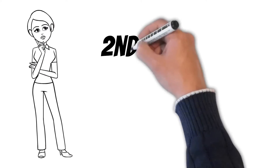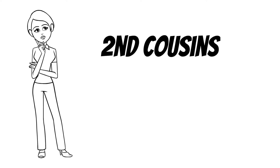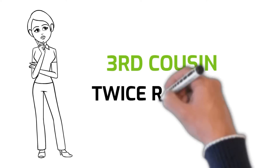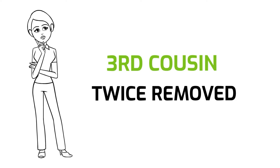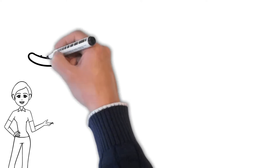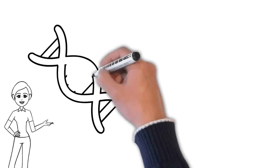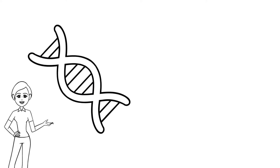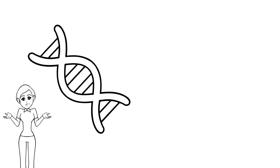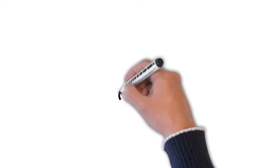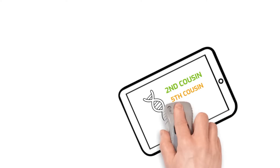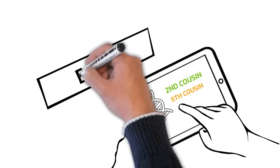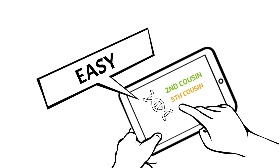Who exactly are my second cousins? And if someone is my third cousin twice removed, what does that mean? What about that DNA test I took — I have matches and they say that I'm second cousins and fifth cousins with people. What does that mean? Stick around because in this episode we'll be learning easy ways to understand cousin relationships.